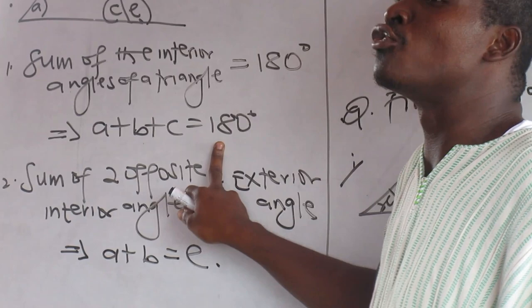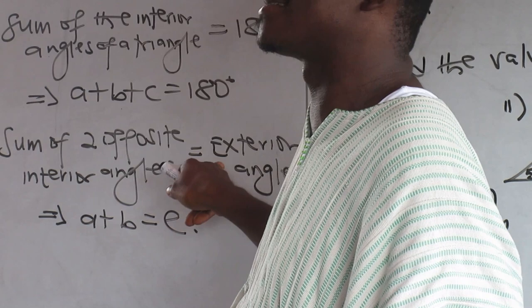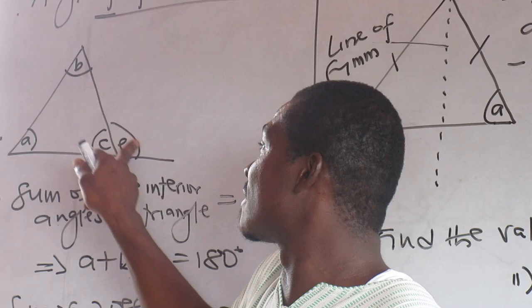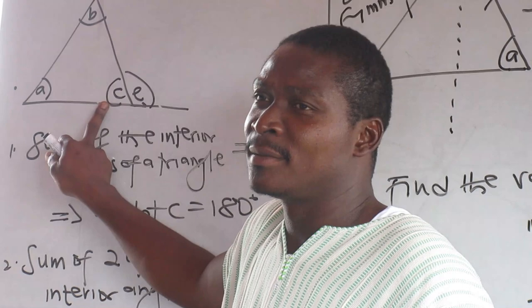Property 2. The sum of the opposite interior angles is equal to the exterior. This and this are opposite. This is here, exterior, outside there. This and this are not opposite. They are adjacent.